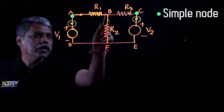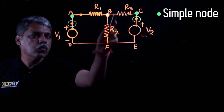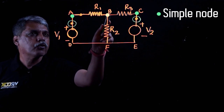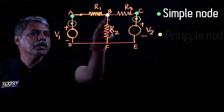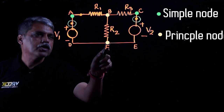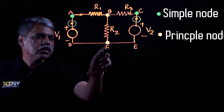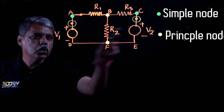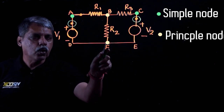Node B is formed by three resistors R1, R2, and R3, so junction B is called a principal node. Similarly, node F is also a principal node because it is formed by interconnecting two voltage sources and resistor R2.